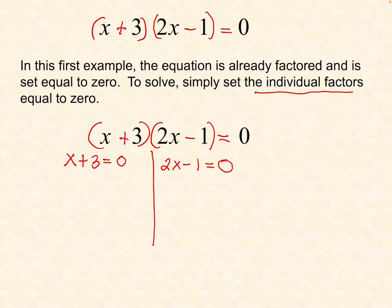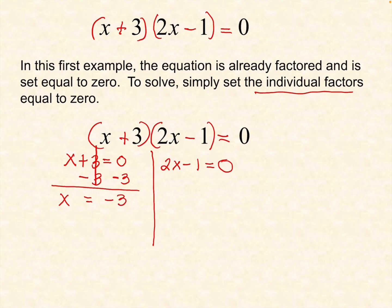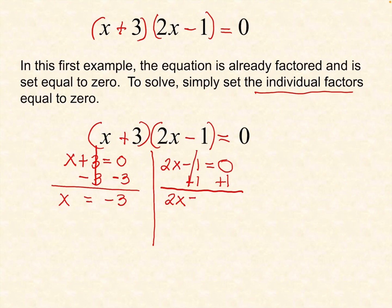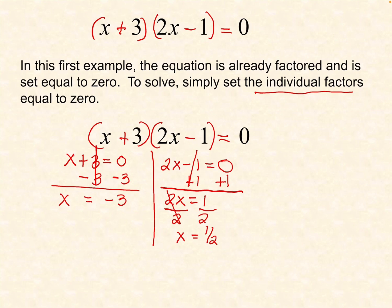We need to solve for x. Get the opposite of 3, which is negative 3, on both sides of the equation. So x plus 3 plus negative 3 equals 0, giving x equals negative 3. For the second factor, get the opposite of negative 1, which is positive 1, on both sides. So 2x equals 1. Dividing both sides by 2, x equals 1 half. The solution is x equals negative 3 and x equals 1 half.